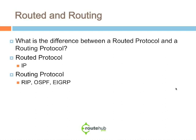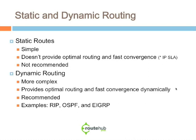Routed versus routing protocols — something you'll learn in CCNA or Networking 101. A routed protocol would be something like IP, IPX, or AppleTalk in terms of legacy protocols. A routing protocol would be something like RIP, OSPF, or EIGRP. Routing can also be configured in two different ways: statically or dynamically. Static routes are simple to configure — you indicate the destination network, the mask, and the next hop of where that destination network is.